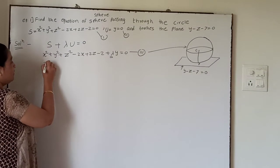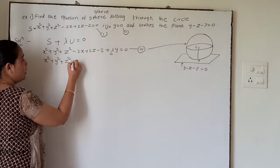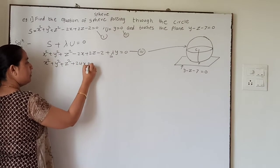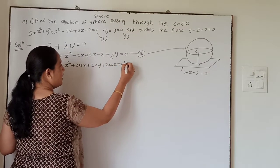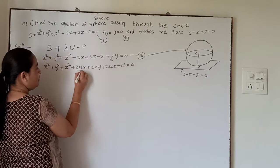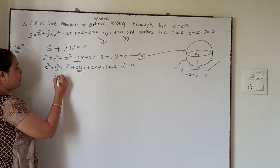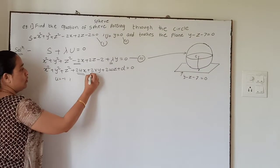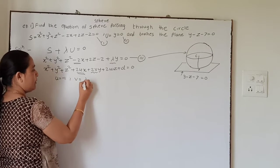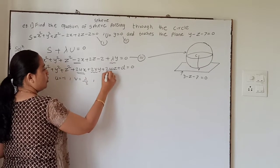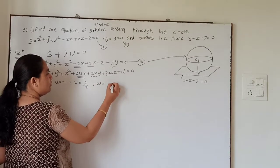First, we compare this equation with the general form x² + y² + z² + 2ux + 2vy + 2wz + d = 0. Comparing, we get 2u = −2, so u = −1. Then 2v = λ, so v = λ/2. And 2w = 2, so w = 1.